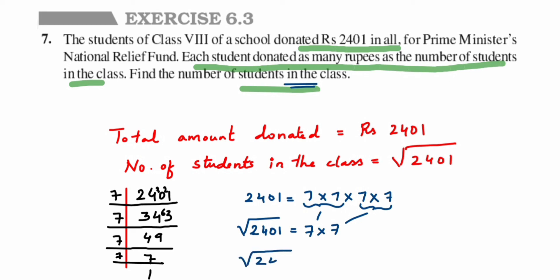So the square root of 2401 is 49. This means there are 49 students in the class, and each student donated 49 rupees, making the total 2401. It was a simple question. I hope it's clear — if you have any questions or doubts, drop a comment below. Thank you for watching.